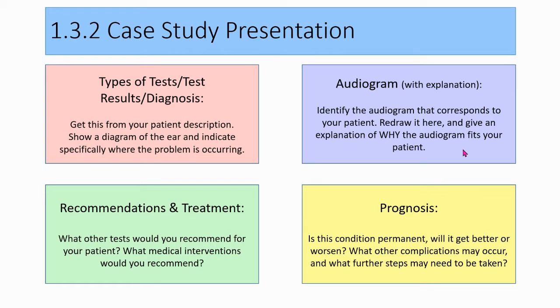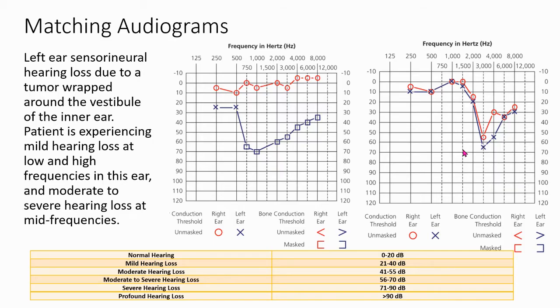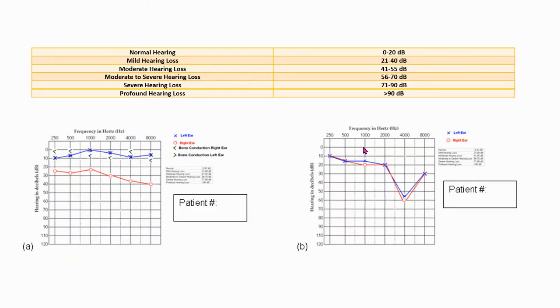So you might be wondering how you're supposed to get that. Well, there is a handout in lesson 1.3.2, and it's got a chart that shows you the range of different levels of hearing loss. You need to pay attention to that, and then it's got 10 audiograms. They're out of order, but they go with the 10 different patients.